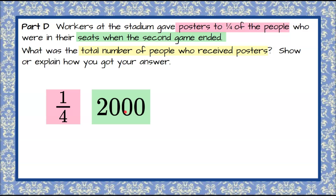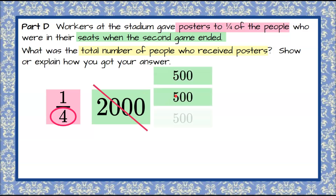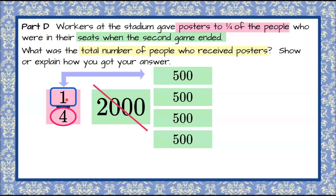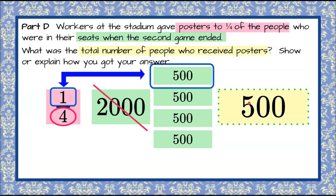One-fourth of these 2,000 people received posters. Let's do this visually again. We have one part of four — four parts for the whole. So I'm going to take 2,000 and put it into four equal parts. Two thousand divided four ways is 500 each: 500, 1,000, 1,500, 2,000 — four parts. We want one of those four parts, which is 500. So one-fourth of 2,000 is 500, meaning 500 people received posters at the end of the second game.